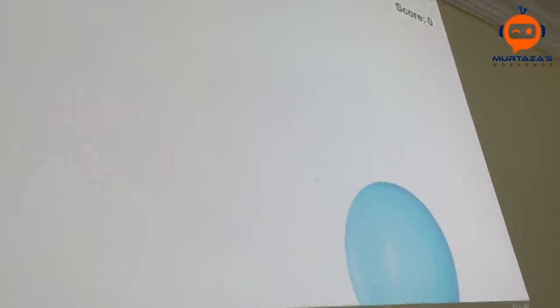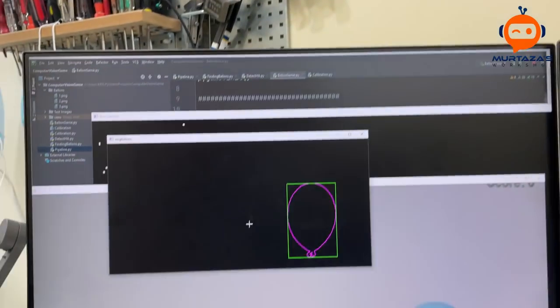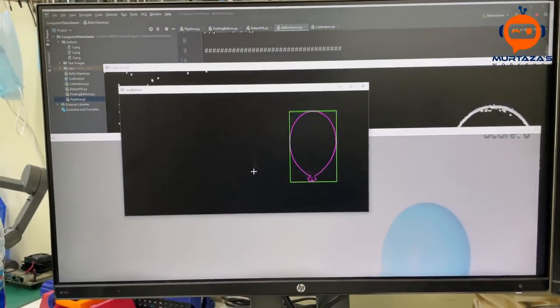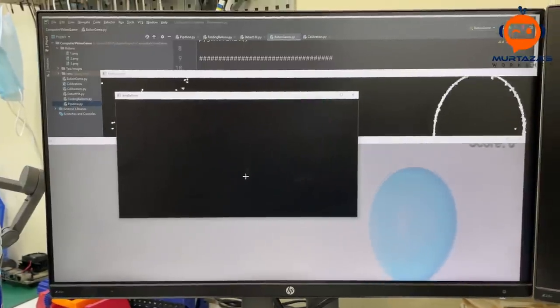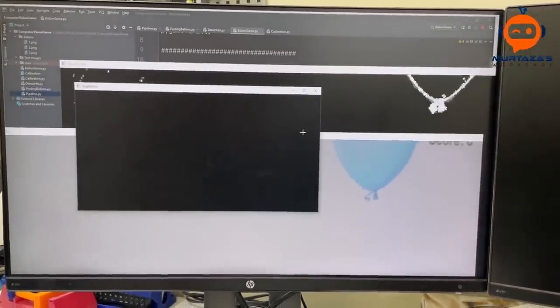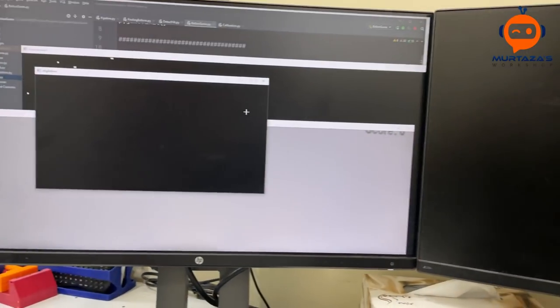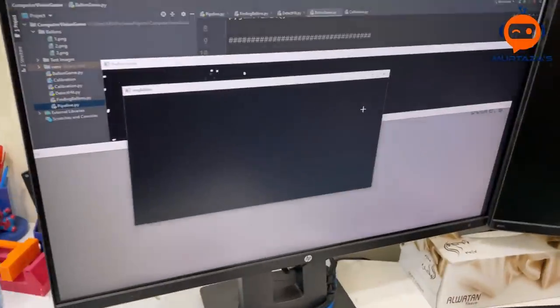So here it should show us the balloon. I can see that if it's not completely on the screen, it will not show us the balloon. So we need to fix that. But when it's completely on the screen, then it will show us the balloon. So we can fix that later. But let's test. I have a ball right here, so I'm going to test with this.